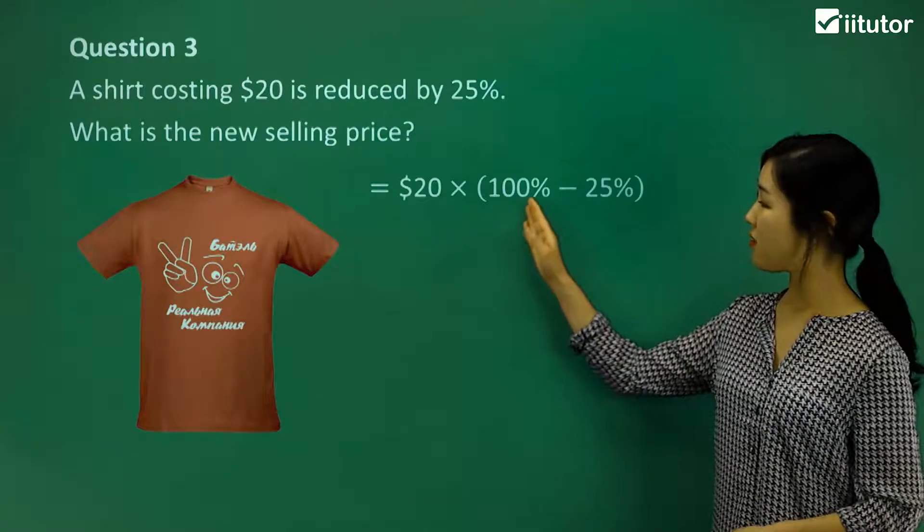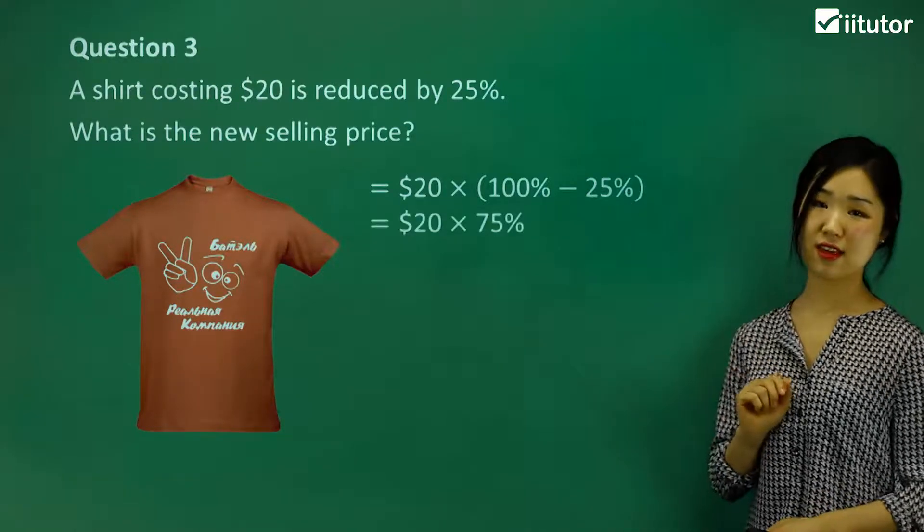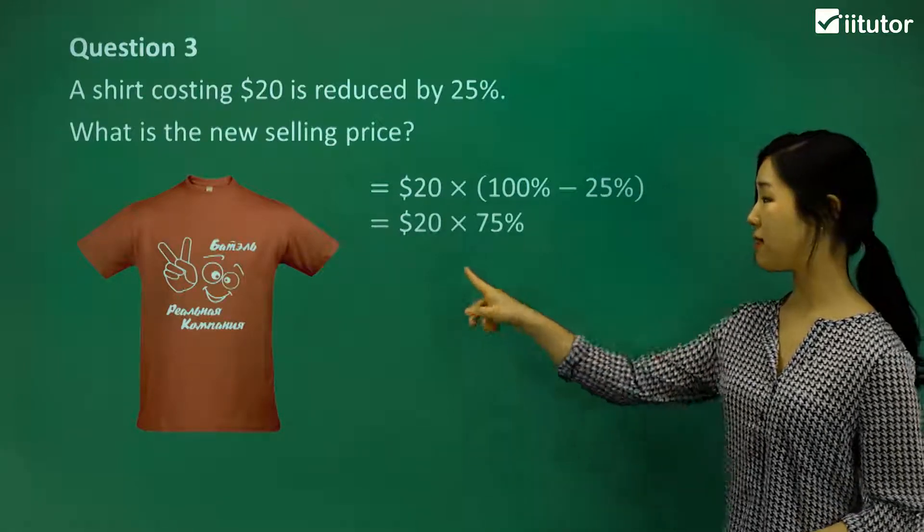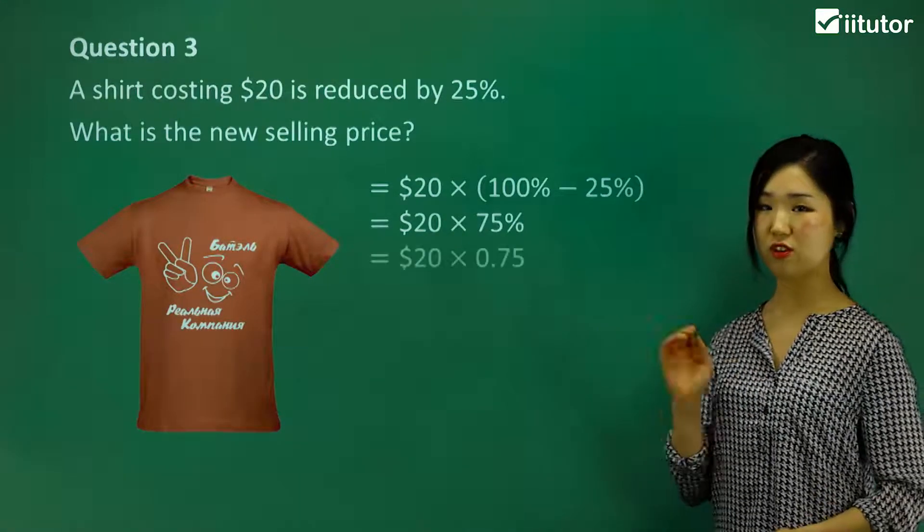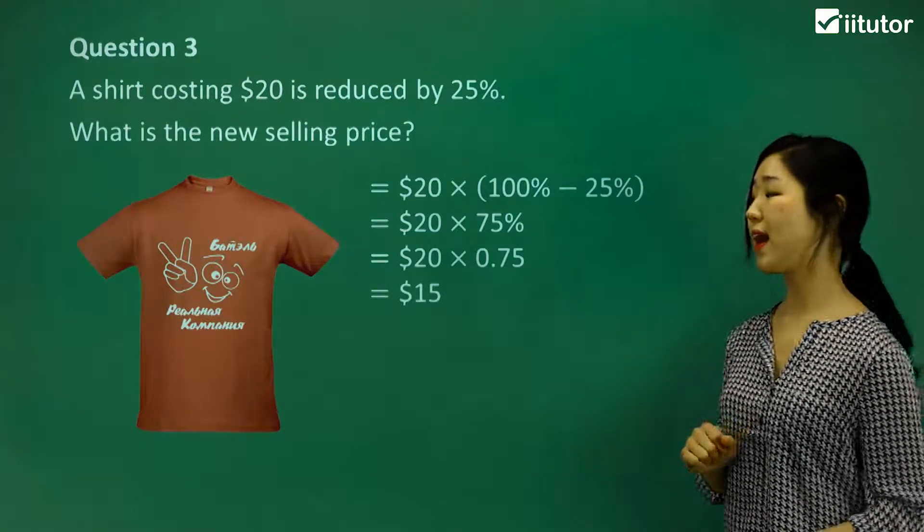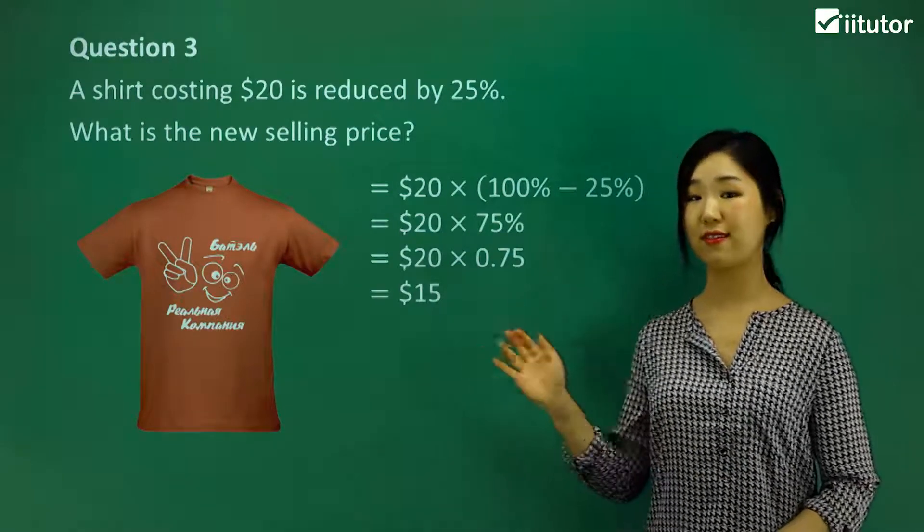Well, we're only paying the remaining 75%. So to get the 75, you do 100%, which is the total, minus the 25, and that's how you get the 75%. So we're basically only paying 75% of the original value, which is $20. Do the multiplication. You can change it to a decimal if you like, 0.75. And multiply, you should get $15. So eventually we're only paying $15. That's the selling price.